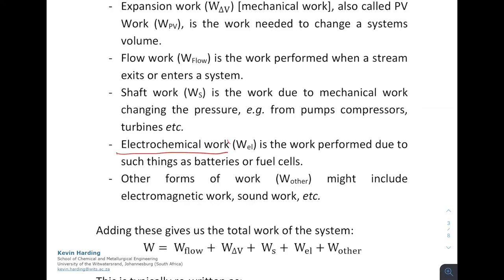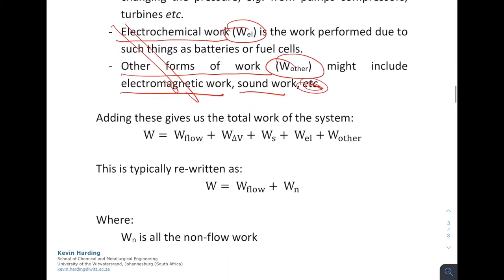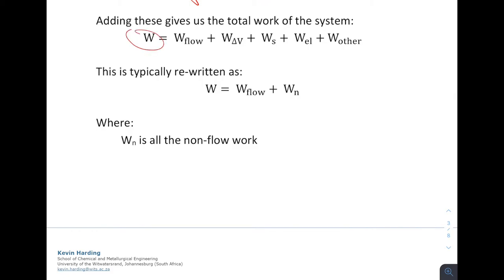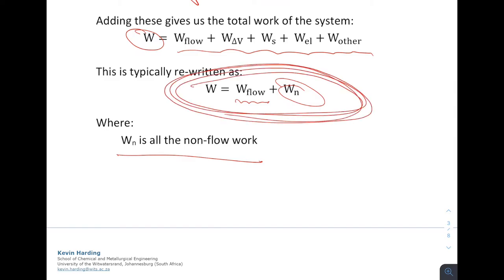The next two are electrochemical work, W_EL, and any other form of work that you might find in textbooks. So electromagnetic work, sound work, and various other examples. These ones are not going to be important for this course. So please don't worry about electrochemical work or any of the other forms of work. Flow work, expansion work, and shaft work are the three that we are going to be looking at. However, if we just quickly look at work in general, typically work W is going to be all of these types of work added together. However, we typically rewrite that as W being the flow work, W_flow, plus W_N for everything else that is non-flow work. So that is typically the definition of work and the breakdown of the terms that we will use.